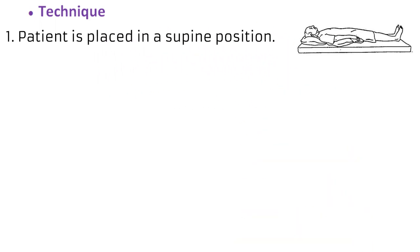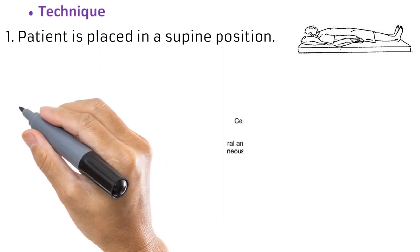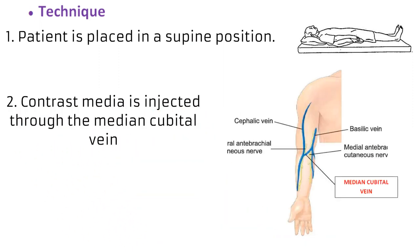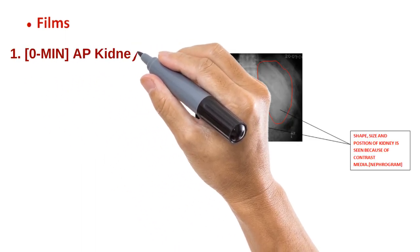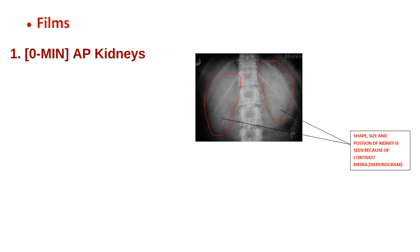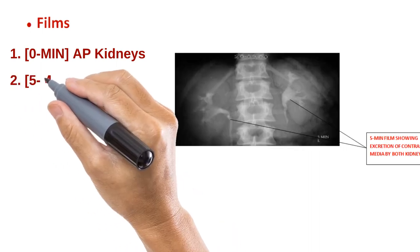For the intravenous urography examination, the patient changes into a clean radiolucent gown and lies supine on the radiographic table. The selected volume of contrast media is then injected through a cannula placed in the median cubital vein. Immediately after this, the film sequence starts. The first image is an anterior-posterior view of the kidneys, taken 10 to 14 seconds after the contrast media has been injected. It is called the nephrogram phase and gives a clear outline of the shape, size, and position of the kidneys.